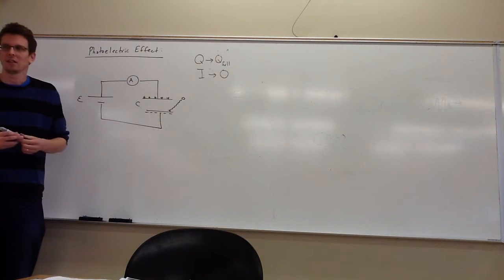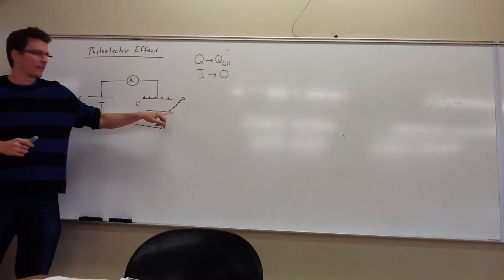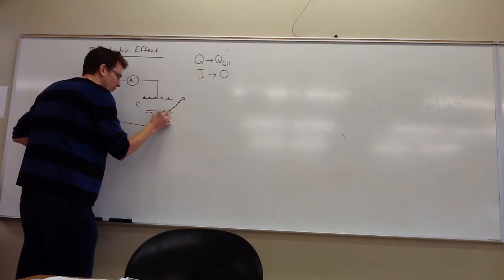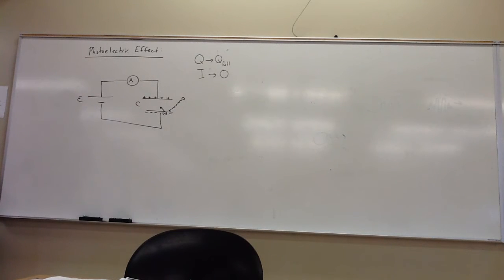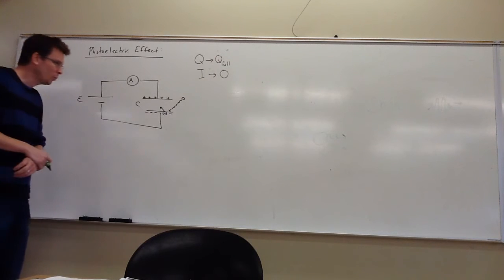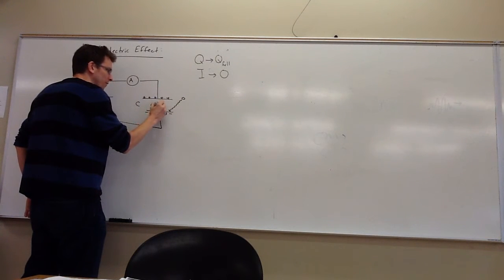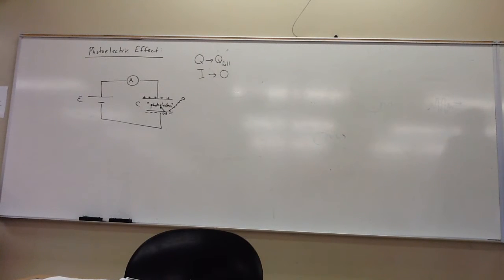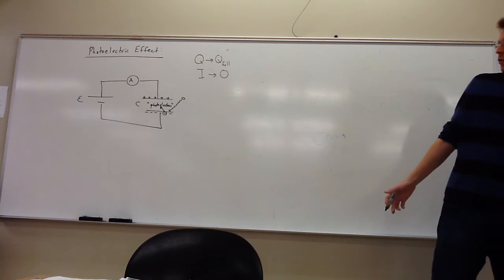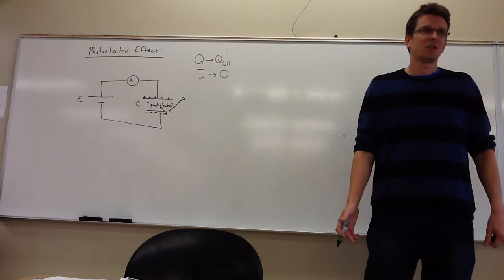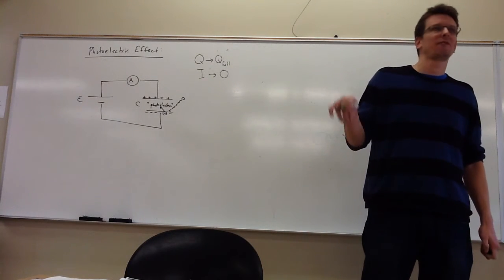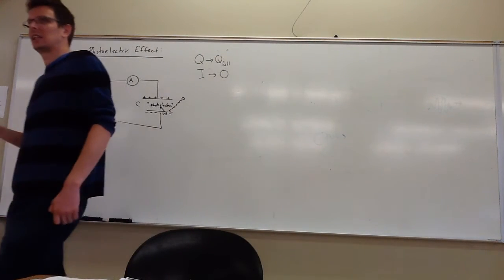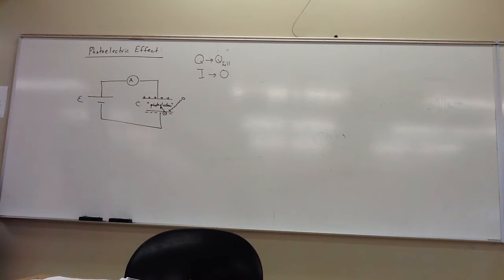Now we're going to introduce, completely out of left field, an element we did not consider previously: we can actually shine light onto one of these plates. We find something interesting — if the properties of that light are just right, suddenly we get current again. What's happened is that the light coming in has energy, and that energy, if it's enough, will actually pop off one of these electrons. Some of these electrons will actually get liberated and can jump off the material completely because they have enough energy to do so. When they pop off, they're called a photoelectron — which is a funny name because it makes it sound like they're some weird mutant; they're just regular electrons that happened to get popped off the material.